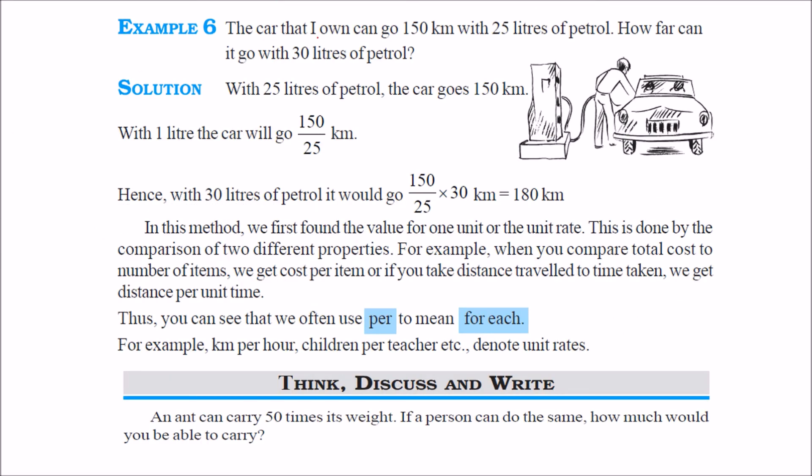The car that I own can go 150 km in 25 liters. So for 25 liters it goes up to 150 km. For 1 liter it will go for 150 by 25 km. For 1 liter. So for how far it will go for 30 liters? So you just have to multiply it by 30. So 150 by 25 into 30.